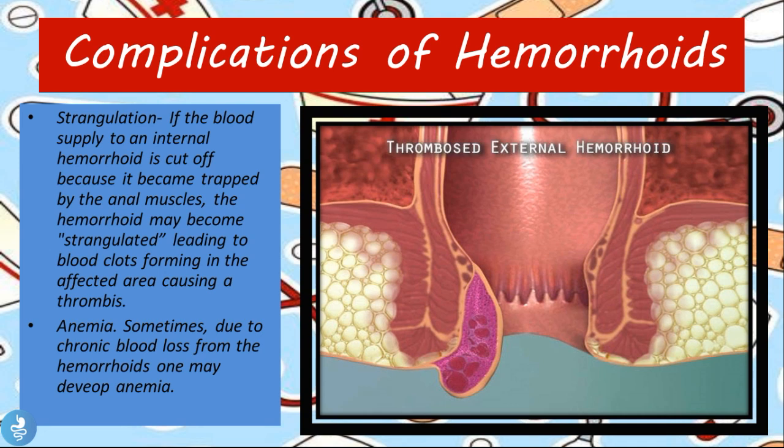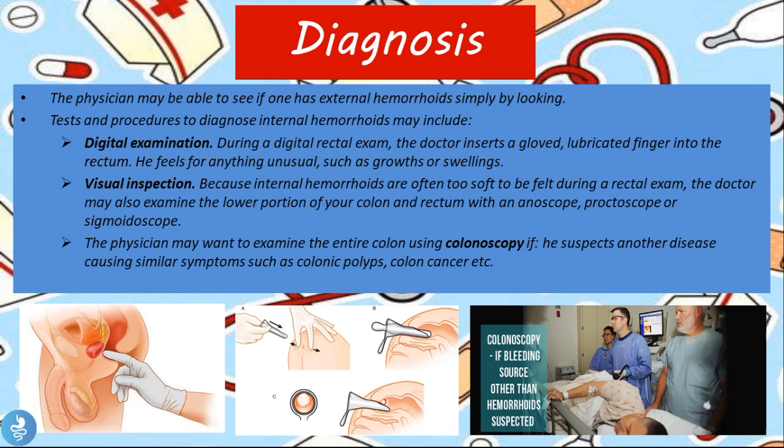Another complication is anemia. Due to chronic blood loss from hemorrhoids, one may develop anemia. Recall that the first sign or symptom is bleeding per anus — hematochesia — meaning fresh blood in the stool. If patients experience significant hematochesia over time, they will develop anemia because they are losing all that blood in their stool.